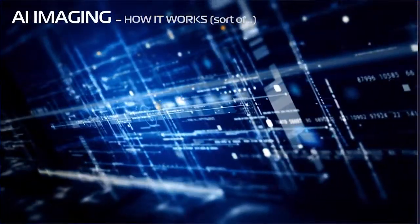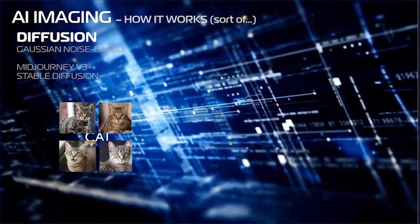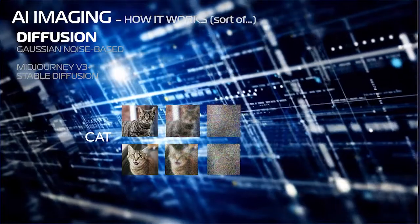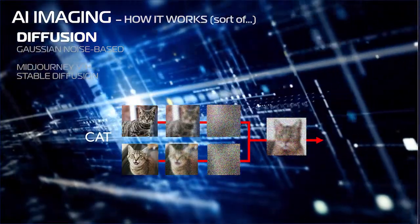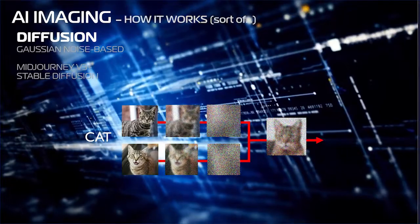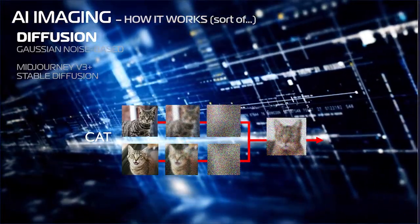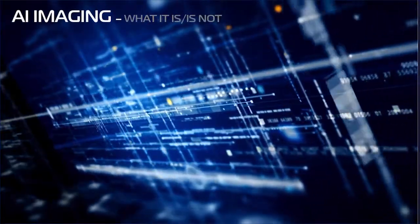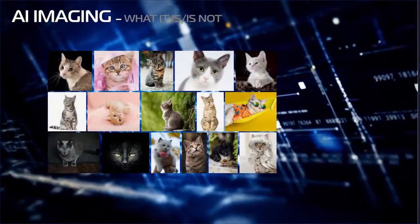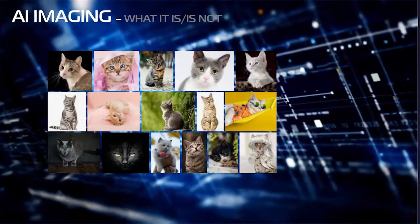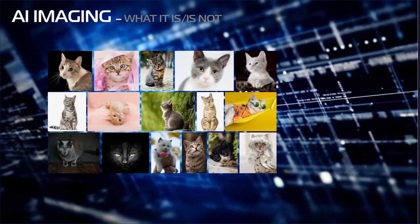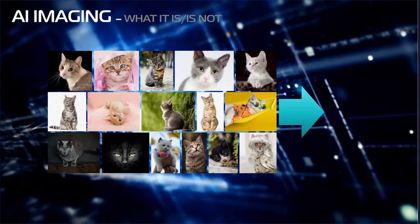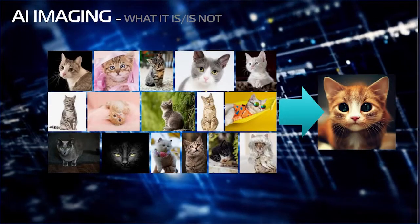In the diffusion method, we start with billions of tagged images — here are our cats. We then add Gaussian noise to the image until it's unrecognizable. The AI is trained to reverse that process, generating completely new, unique images. Like a painter creating a new work in the style of other painters, the AI creates a wholly new image based on concepts learned from input photos. It is not creating an image made up of these other photos — this is a wholly new image.